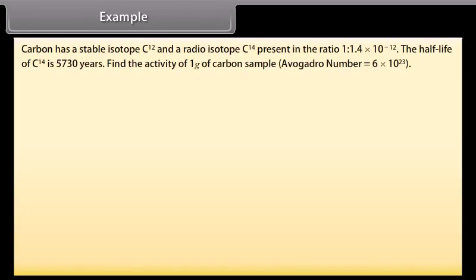Example: Carbon has a stable isotope Carbon-12 and a radioisotope Carbon-14 present in the ratio 1 is to 1.4 into 10 raised to the power minus 12. The half-life of carbon-14 is 5,730 years. Find the activity of 1 gram of carbon sample. Avogadro's number is equal to 6 into 10 raised to the power 23.